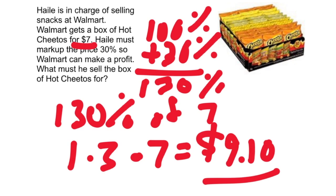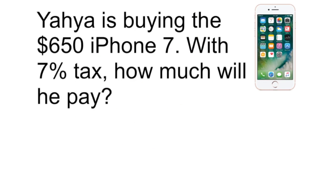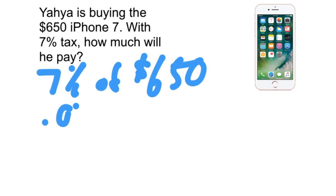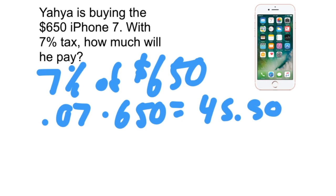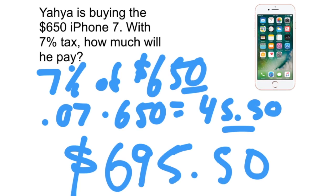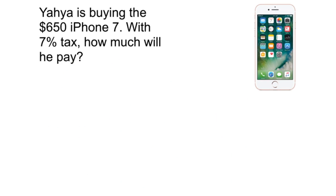When you're calculating tax, that's the same as marking up the price, so the work is exactly the same. Yaya is buying the $650 iPhone 7 with 7% tax. How much will he pay? We find 7% of $650: seven-hundredths times 650 gives a tax of $45.50. Adding that to $650 gives a total cost of $695.50. This two-step approach requires finding tax first, then adding.